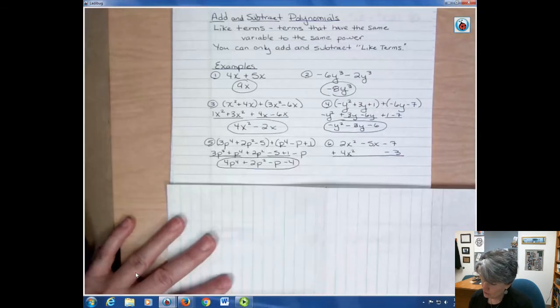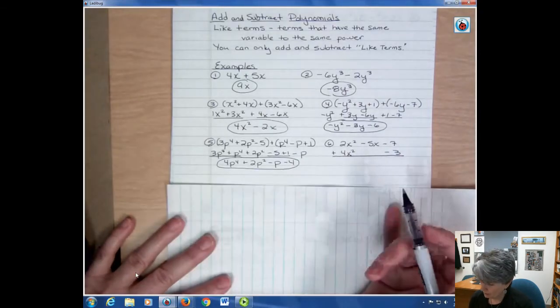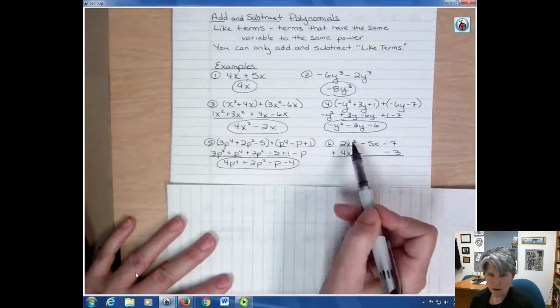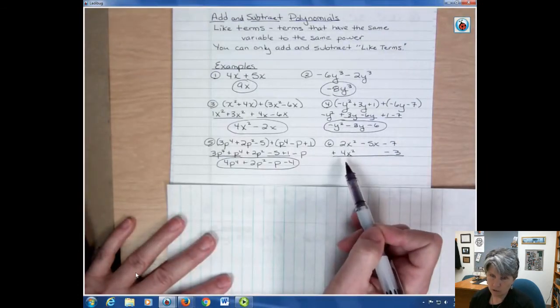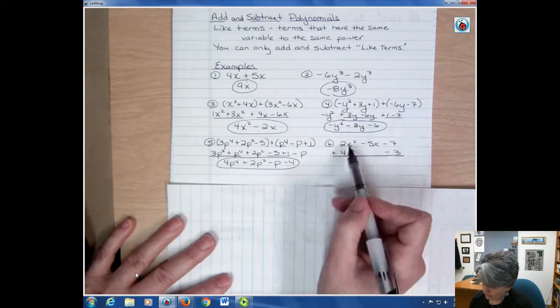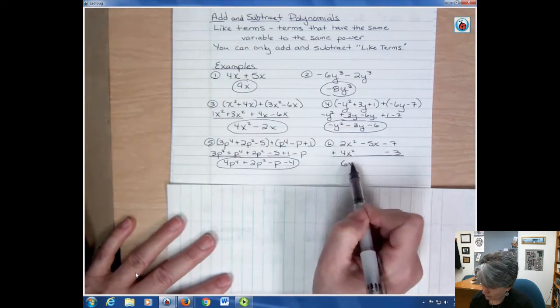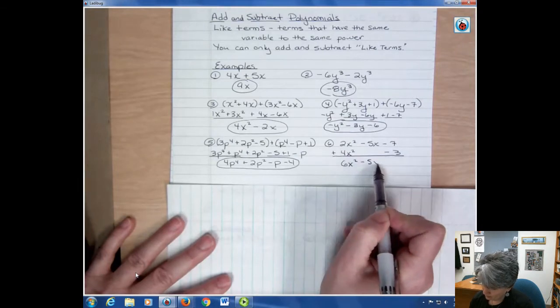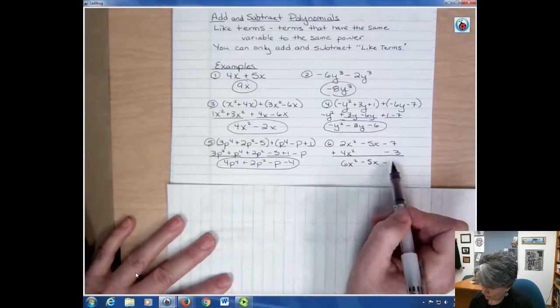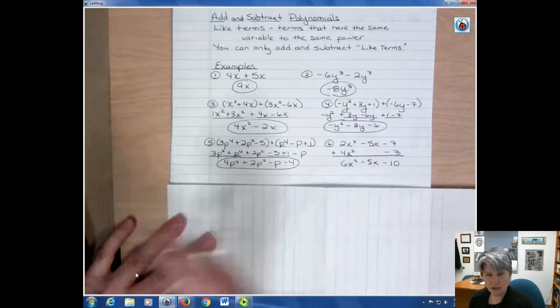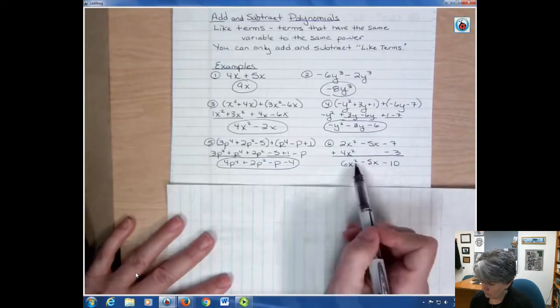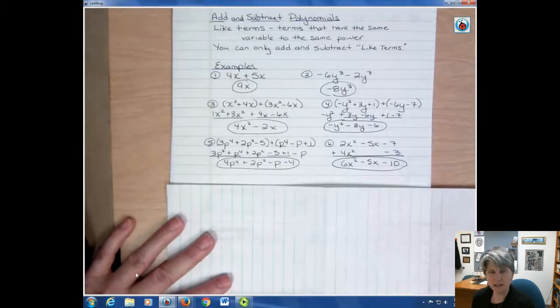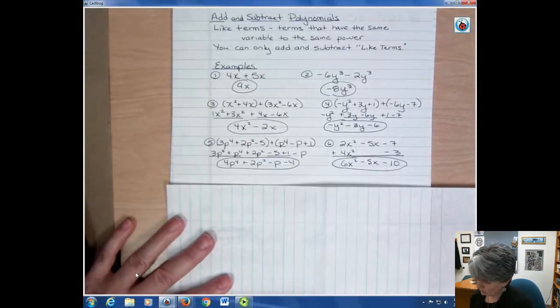Number six is just a different way to look at a problem. Instead of putting things side by side, you could line them up one over the other like this and work it that way. Notice that the x squareds are lined up. There's nothing that matches the x. And then my constant terms or my zero degree terms are lined up. That's as far as I can go because I have second degree, first degree, zero degree. I can't add things together unless they have the same power, so I'm stuck right there.